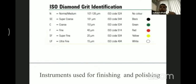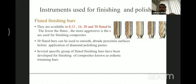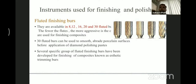Instruments used for finishing and polishing include finishing burs. The fewer the number of cutting blades on the bur, the more aggressive it is. Finishing burs are available in different gradations — from 8, 10, 16, 20, to 30 flutes — and should be used in sequence from fewer flutes to more flutes. Initially use 8 flutes, then 12, 16, 20, and 30, so that you achieve a uniform smooth surface and a finished luster on the material.